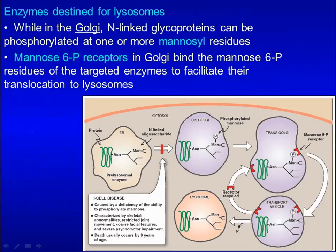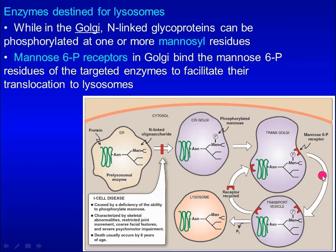While in the Golgi, N-linked glycoproteins can be phosphorylated at one or more mannose residues. Mannose-6-phosphate receptors in the Golgi bind the mannose-6-phosphate residues of the target enzymes to facilitate their translocation to the lysosome.